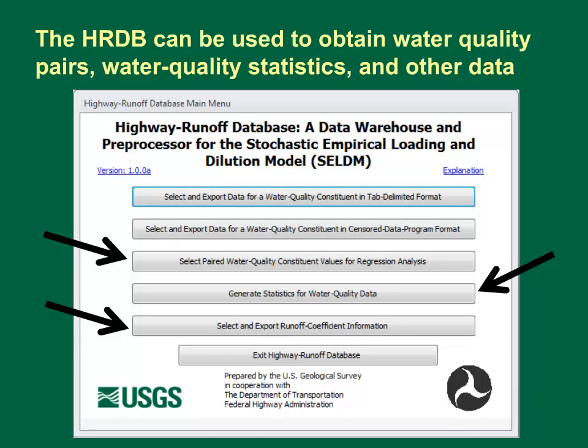The Highway Runoff Database can be used to obtain water quality pairs, water quality statistics, and other data. It is a simple graphical user interface. Users can get data or statistics they need by clicking through a few buttons on a few forms. This screenshot shows the main menu. It has five buttons to get data or statistics and one button to exit the database.